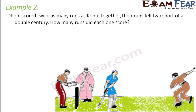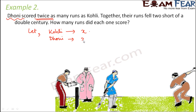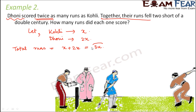Next example: Dhoni scored twice as many runs as Kohli. Together their runs fell 2 short of a double century. How many runs did each score? Let Kohli's score be x runs, so Dhoni scored 2x. Their total is x plus 2x equals 3x. A double century is 200, and 3x falls 2 short of 200, so 200 minus 3x equals 2.